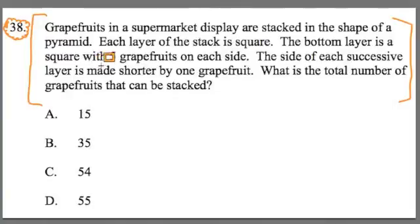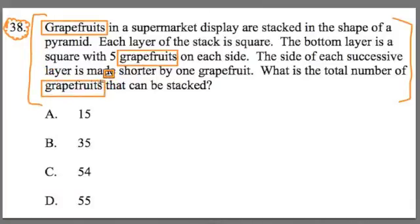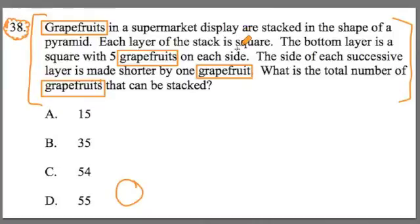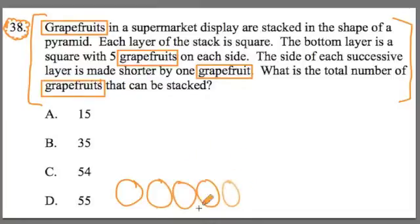As you do that, you've got to pull out some key information. First off, our central image is grapefruits. When I think of grapefruits, I think of something that looks like a big orange, except different. You want to have that image — here's my big grapefruit. It says these are in the shape of a square, stacked like a pyramid. The bottom layer has five, so I'm thinking grapefruits — visually, I'm seeing these big grapefruits. This first row has five, the next row has four.